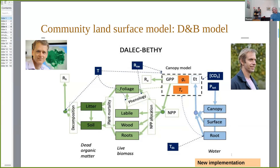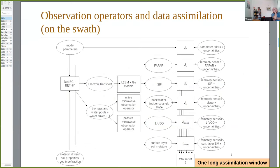This is really a new implementation — new code with a focus on computational efficiency. We call it DNB. On the other side, we have the observational data streams we targeted in the Carbon Constellation.